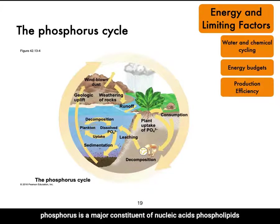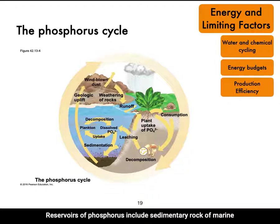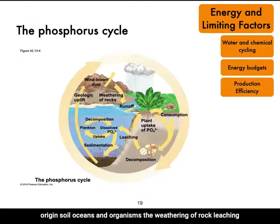Phosphorus is a major constituent of nucleic acids, phospholipids, and our main energy source in mammalian cells, ATP. Phosphate is the most important inorganic form of phosphorus. Reservoirs of phosphorus include sedimentary rock of marine origin, soil, oceans, and organisms.